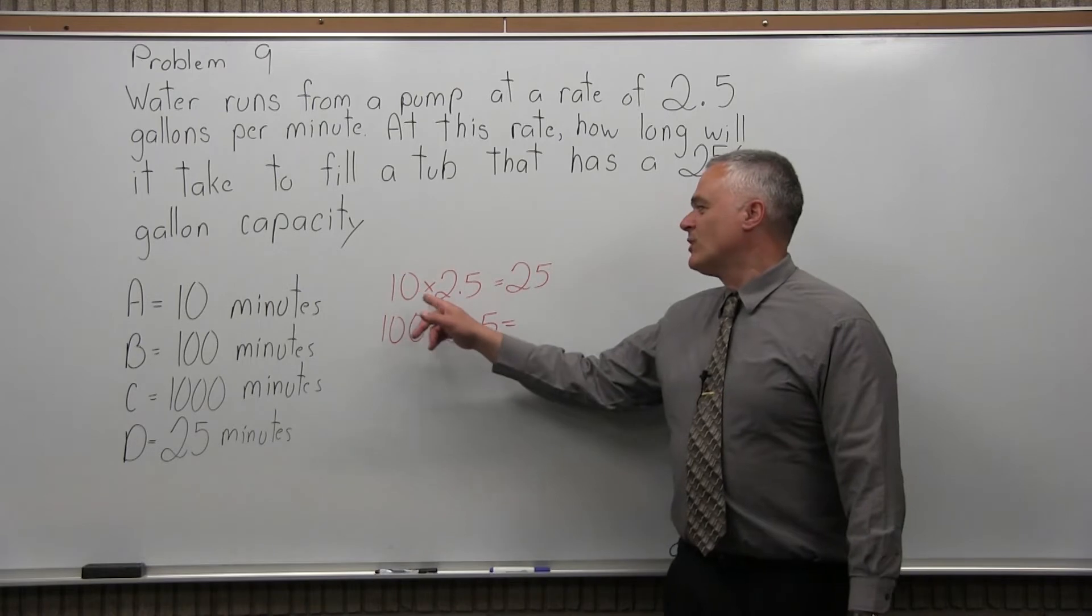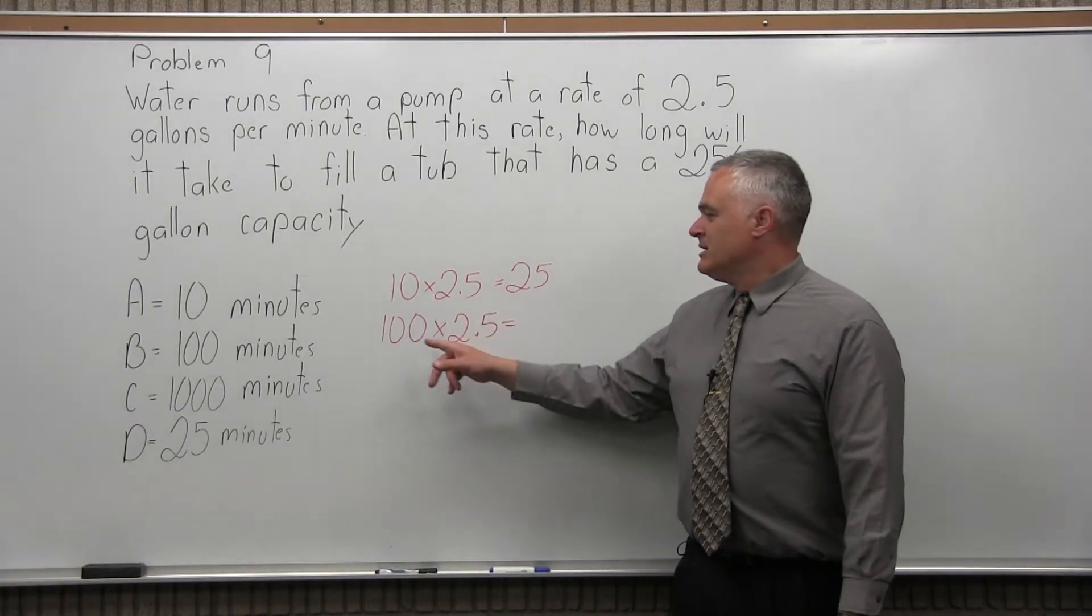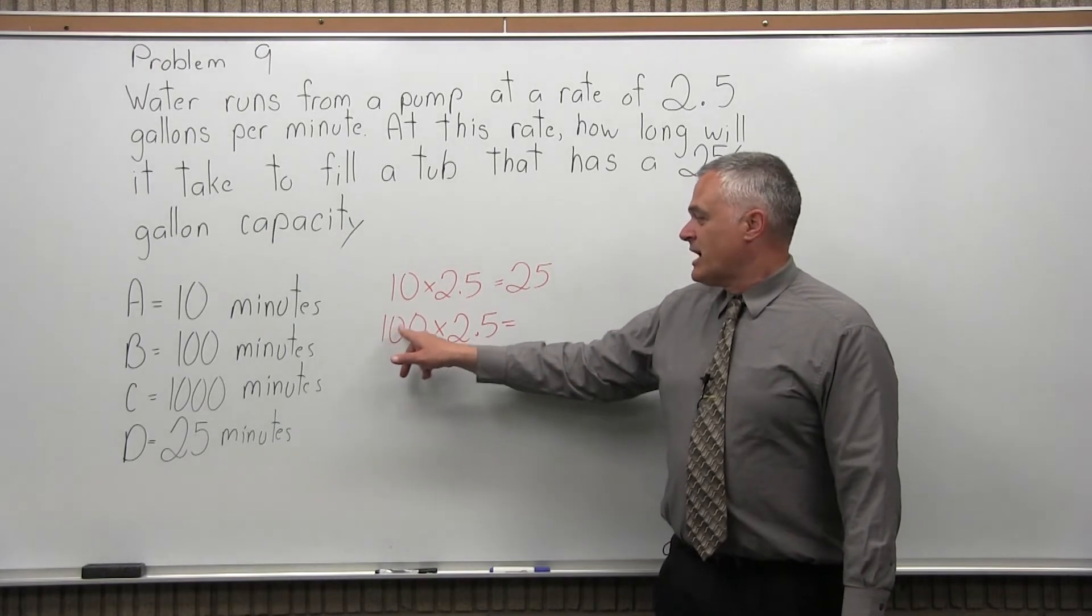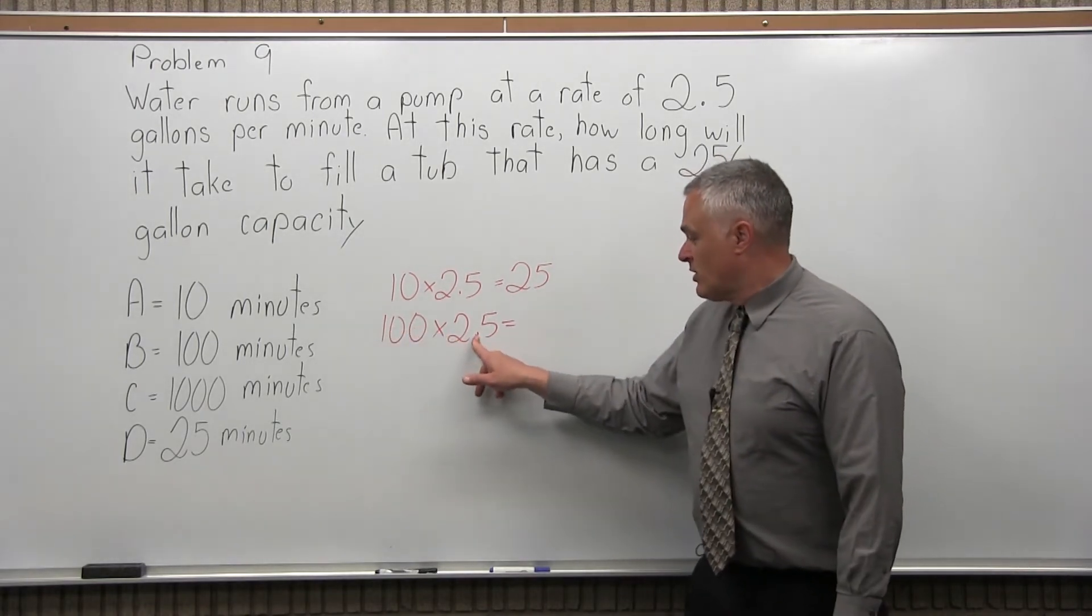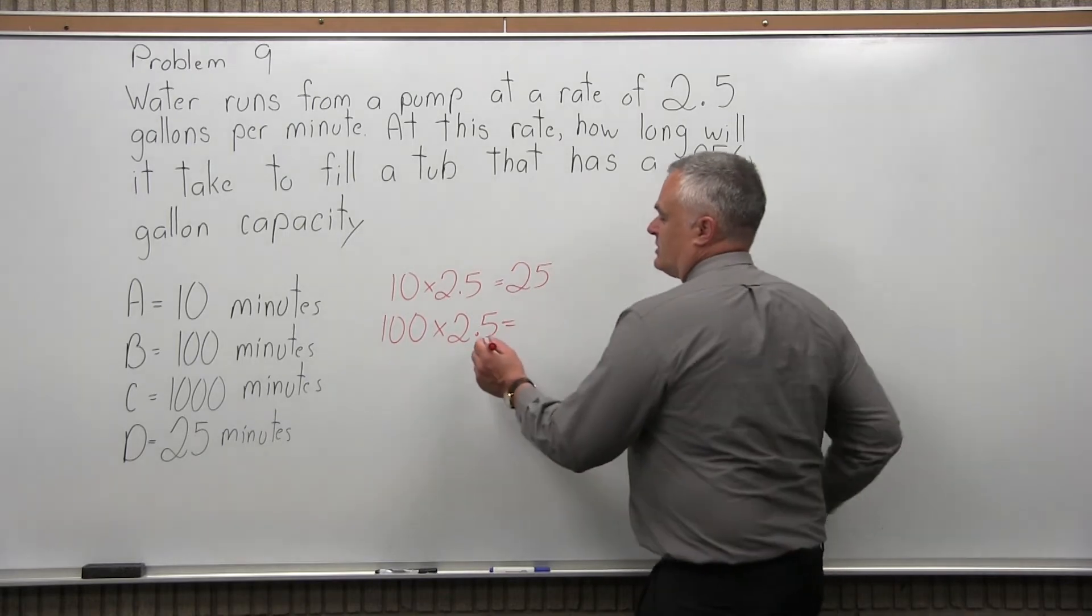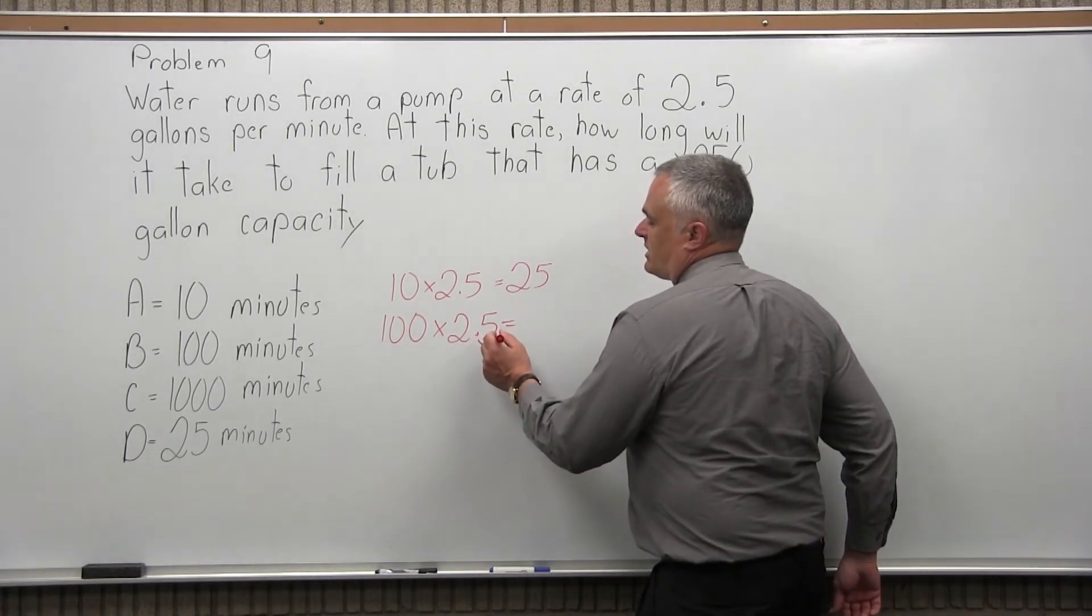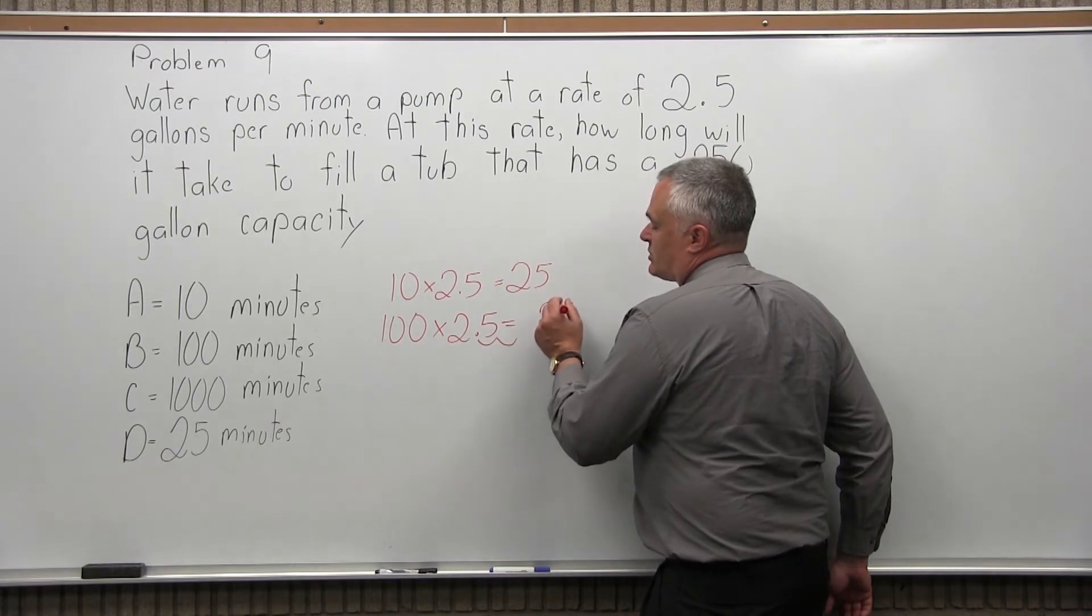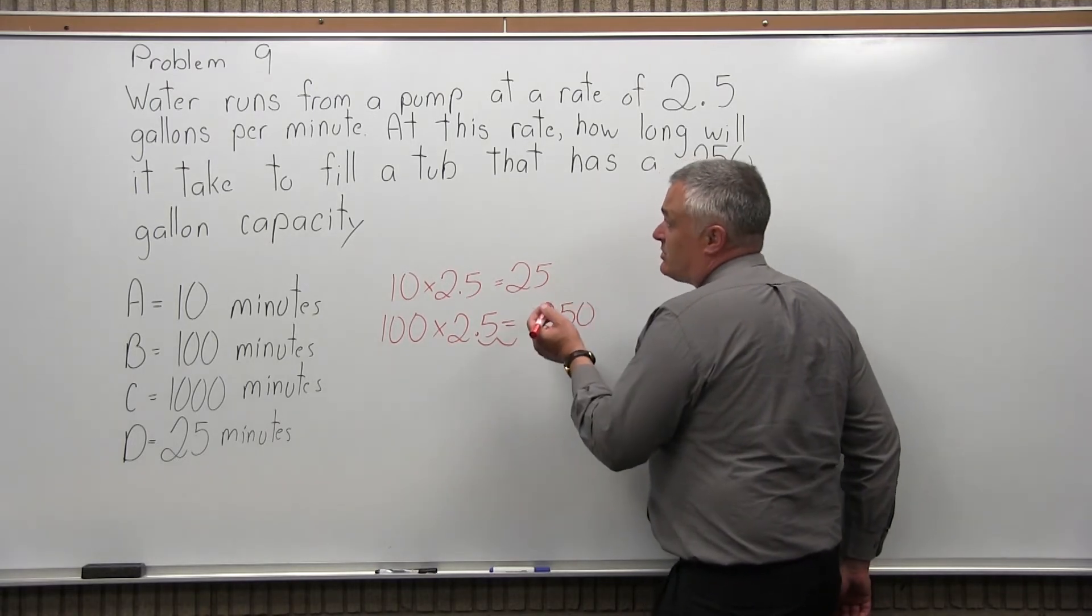So when I did times ten, one zero, I moved it one spot. Times 100, and that only works when the first digit is one. So times 100, two zeros, you move it two places. So you move it one place and it goes to the right of the five and you have to move it another place. There is no place, but you can move it and fill it in with a zero. So it's 25 with a zero after, which is 250.